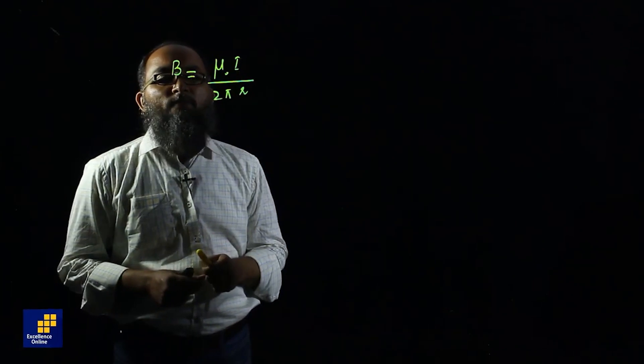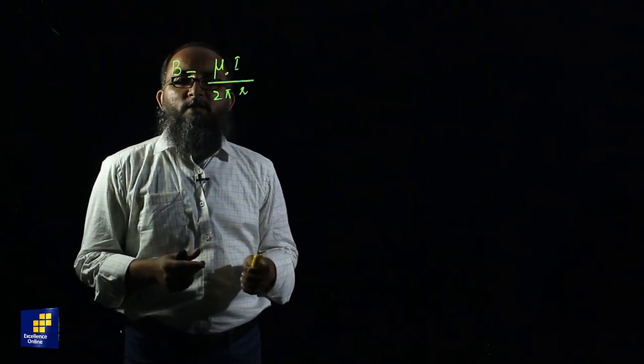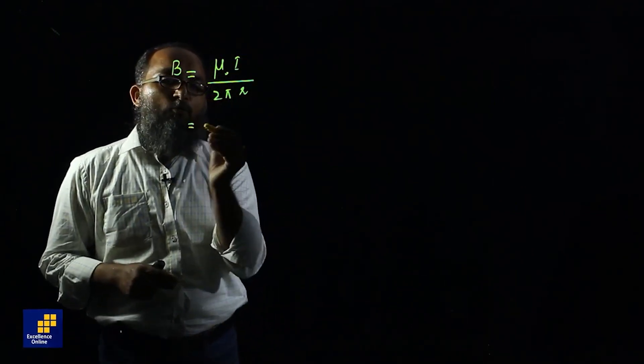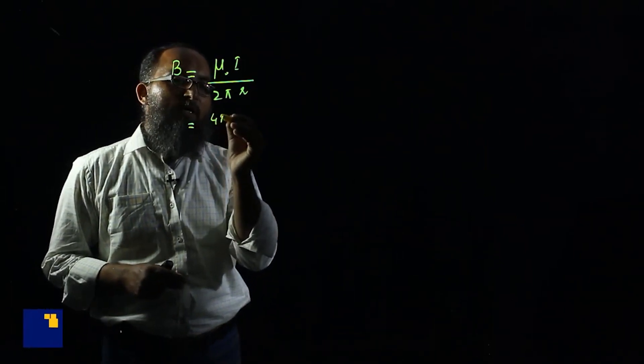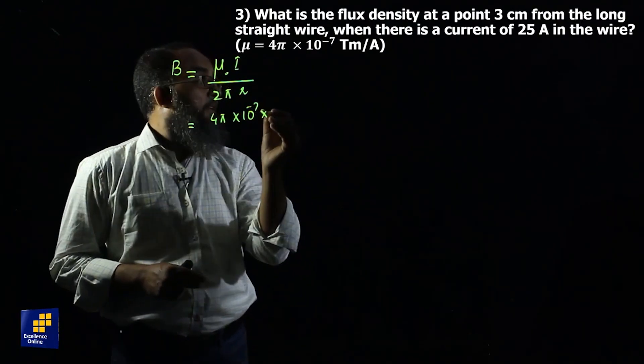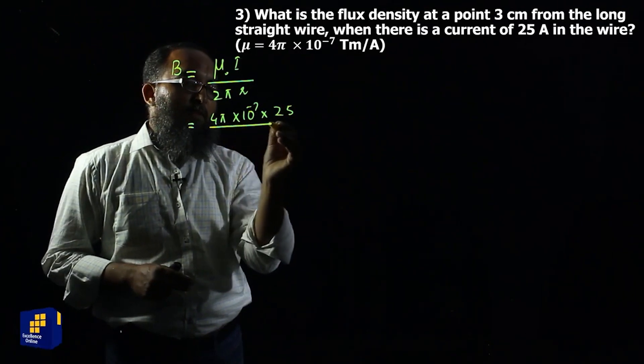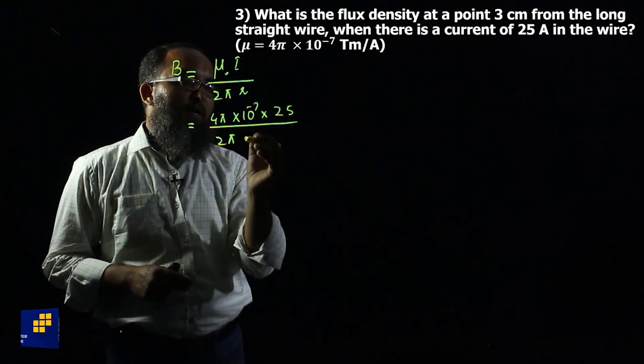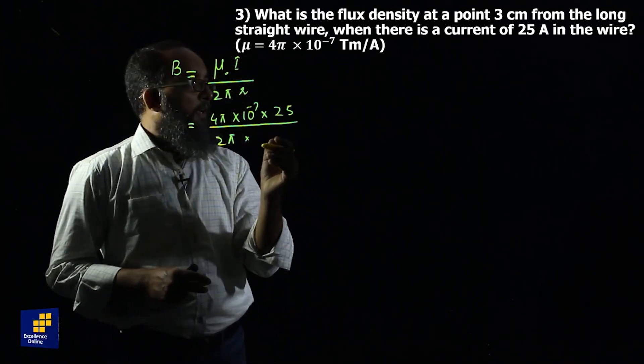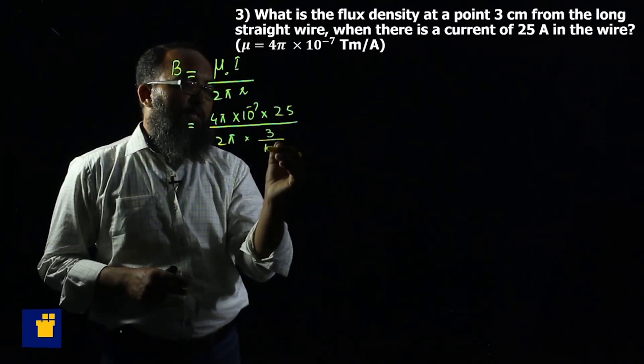i is the current flowing through the wire, and r is the distance at which we have to find the magnitude of flux density. The value is 4 pi exponential minus 7. The current is 25 ampere, 2 pi will remain 2 pi, and r is 3 cm. Distance is 3 cm. When we convert centimeter to meter, we divide by 100.